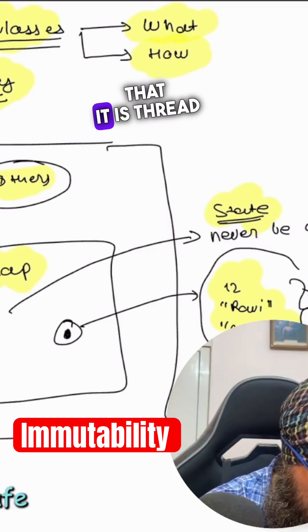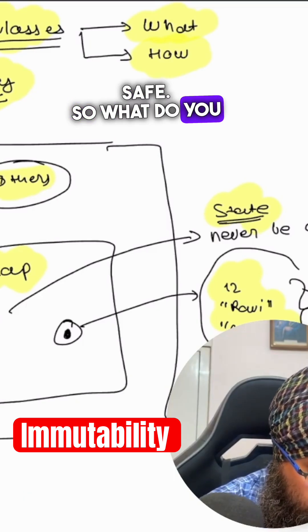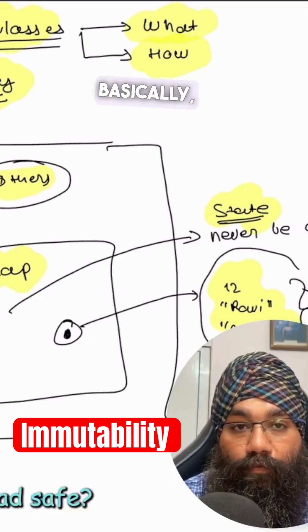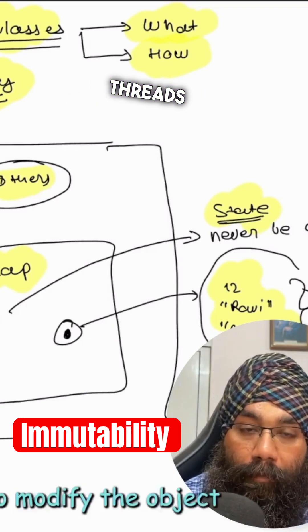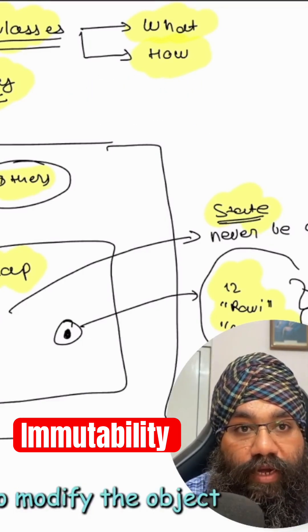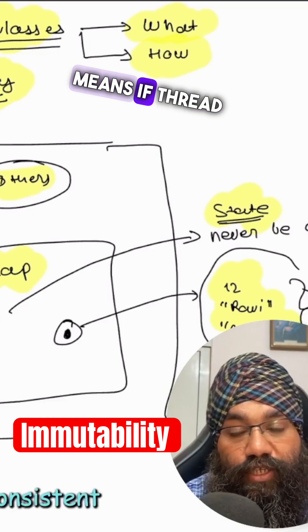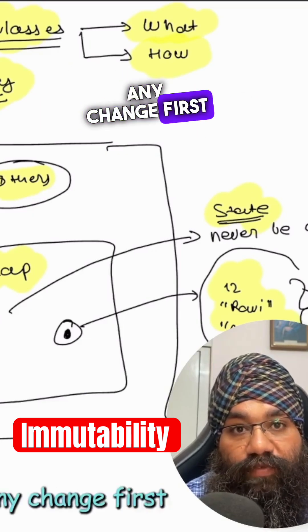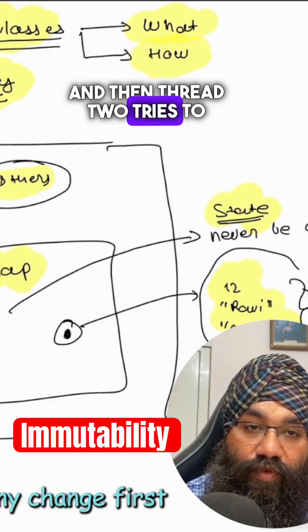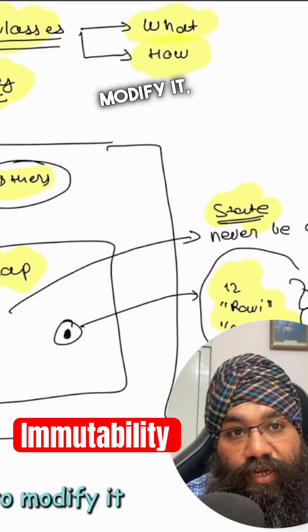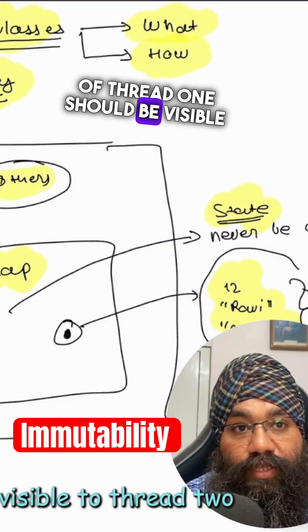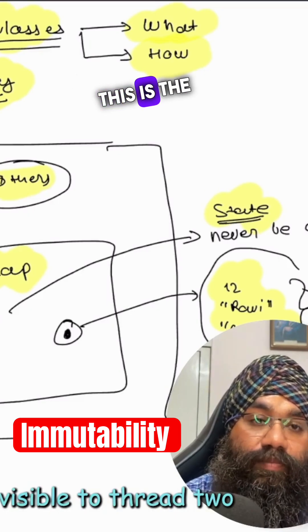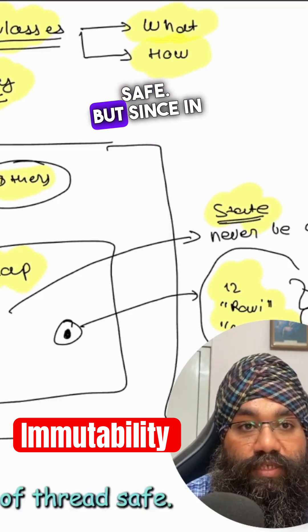What do you mean by thread safe? Basically, when multiple threads try to modify the object, the changes should be consistent. This means if thread 1 modifies any change first and then thread 2 tries to modify it, the changes of thread 1 should be visible to thread 2. This is the meaning of thread safe.